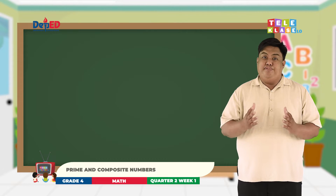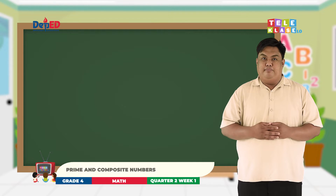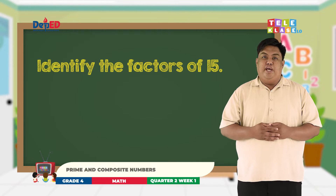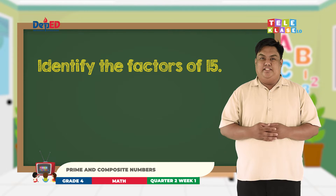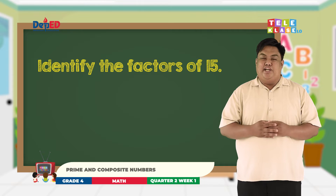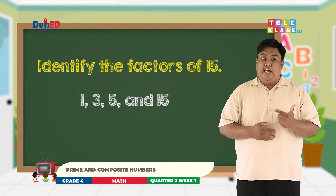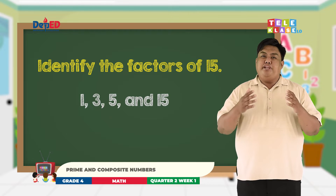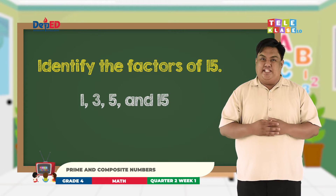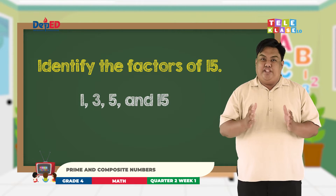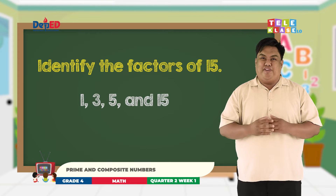Okay, let's have the first number. We have 15. Correct! The factors are 1, 3, 5, and 15. So how many factors does it have? Yes! 15 has 4 factors.